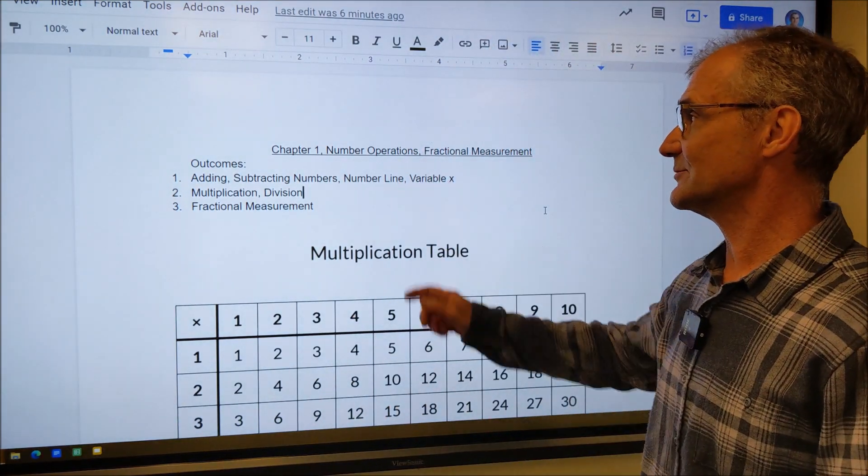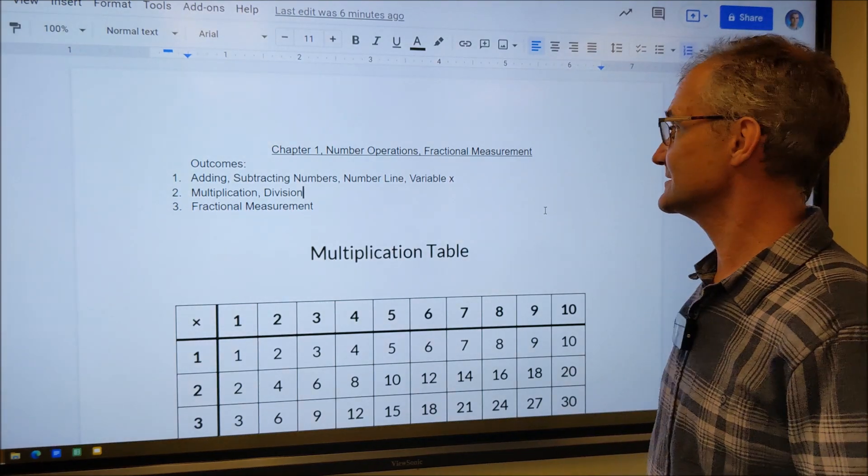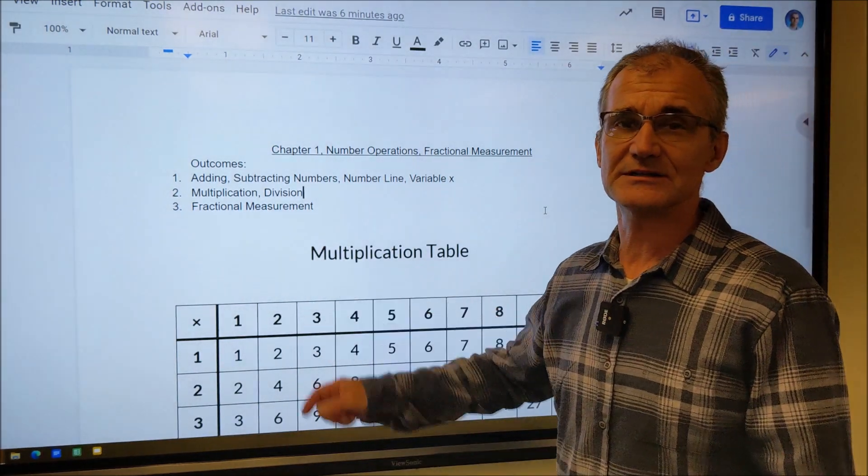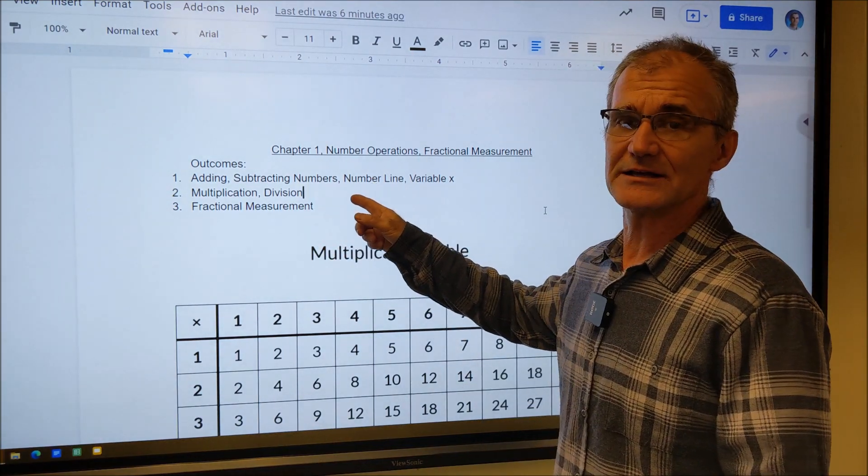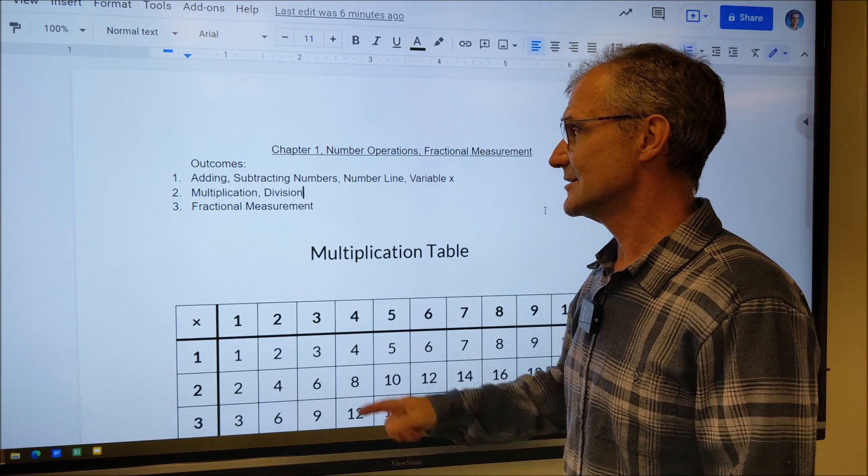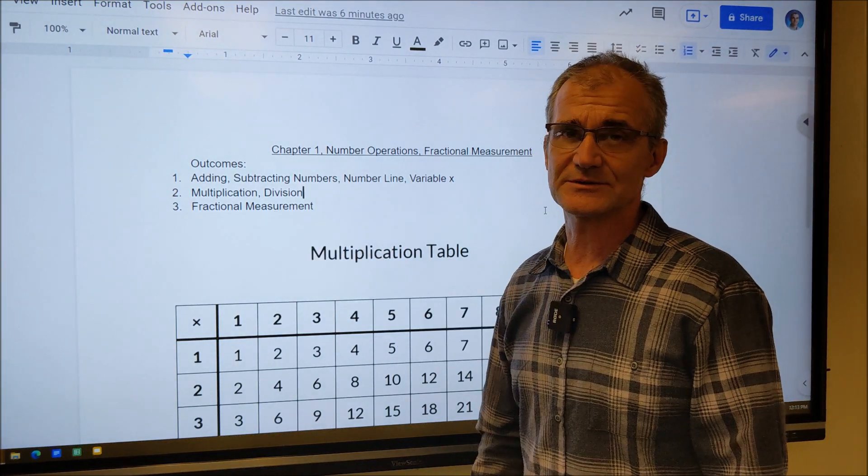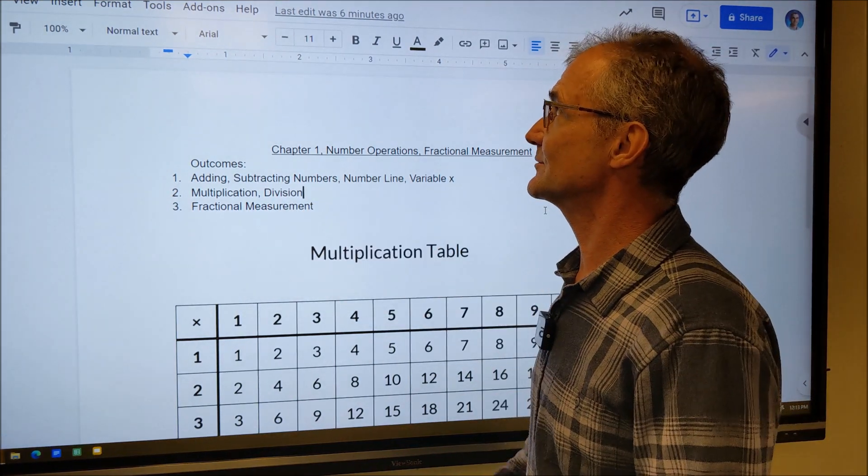We're going to start chapter one with number operations and fractional measurement. I have it split into three outcomes: adding and subtracting numbers using a number line, introducing the variable x, multiplication and division, and fractional measurement. So let's get started with outcome number one.